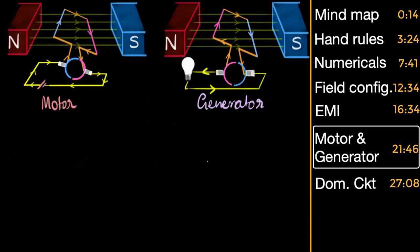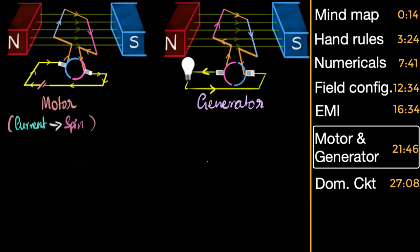We can now jump to motors and generators. Their setups look very similar to each other, but there's a huge difference. In motors, you supply electricity — maybe using a battery — and that electricity produces the spin. The current produces the spin. A quick example: in your fans, when you switch on the current, the fans start spinning; if there is no power, the fans stop spinning. On the other hand, generators are the exact opposite — here, we spin that coil, and that generates the current.